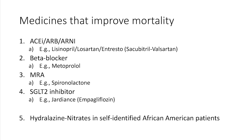These are medicines shown to add years to life or reduce mortality, particularly in people with reduced ejection fraction. The first group — ACEs, ARBs, or ARNIs — includes common blood pressure medicines like lisinopril or losartan. A newer combination medicine called Entresto has been added to the guidelines. A beta blocker such as metoprolol is included. An MRA such as spironolactone is used. An SGLT2 inhibitor like Jardiance — also called empagliflozin — is a diabetes medicine shown to have several benefits in heart failure and is becoming more prevalent.